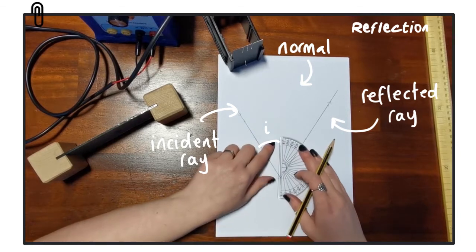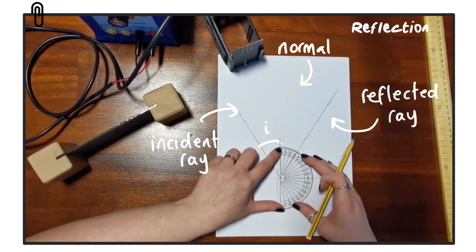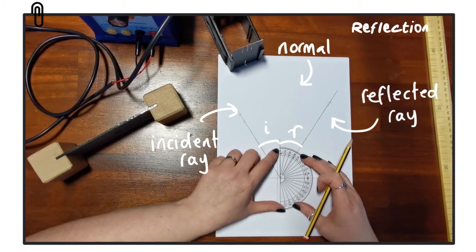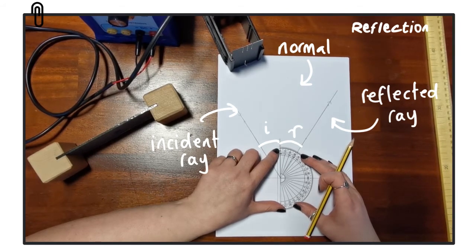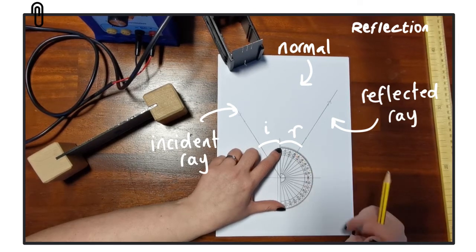Next we measure the angle of reflection which is between the normal and the reflected ray. In this scenario the angle of incidence was equal to 32 degrees and the angle of reflection is also equal to 32 degrees.